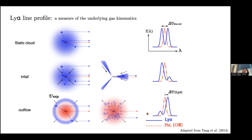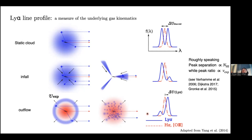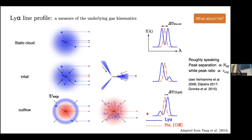Qualitatively speaking, the separation between the two peaks is determined by the total H1 column density, and the peak ratio is driven by the velocity differential. Lyman-alpha is the brightest line coming out of diffuse gas. But in the optical where we're most familiar with nebula and forbidden lines, we should ask: what about H-alpha, also from hydrogen? Do we expect to see it? I'm not going to tell you, but you can come talk to me later.